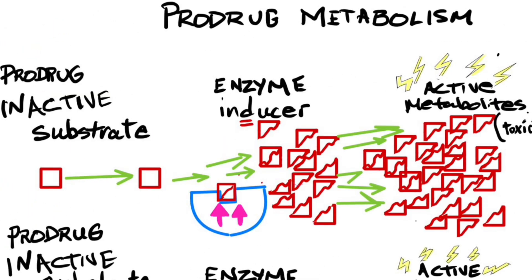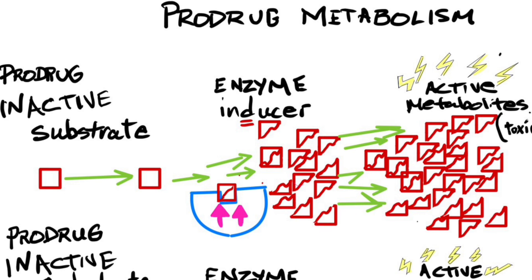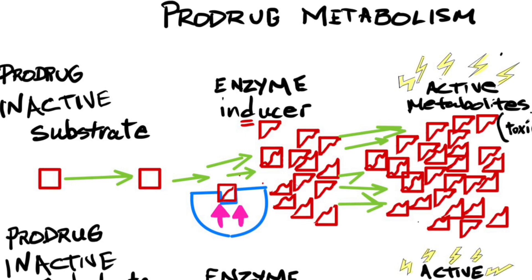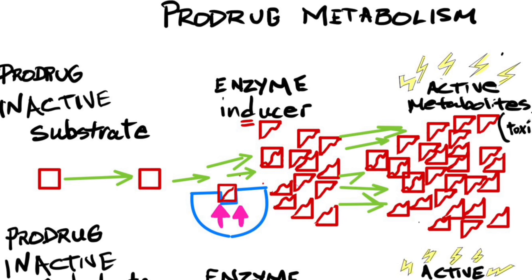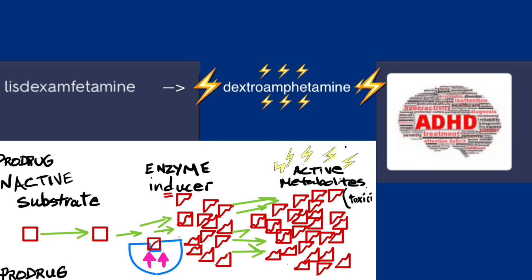A prodrug is a type of inactive compound that's converted into an active drug in the body through various metabolic processes — so it's a precursor to an active drug. The primary purpose of designing a prodrug is to improve its absorption, distribution, metabolism, or excretion, which can enhance the therapeutic effect. The key difference between a prodrug and an active drug lies in their pharmacological activity — the prodrug itself has little or no therapeutic activity until it undergoes a specific biotransformation.